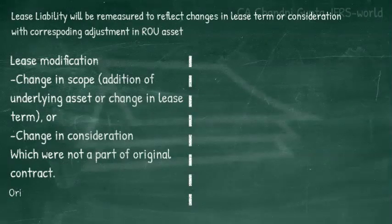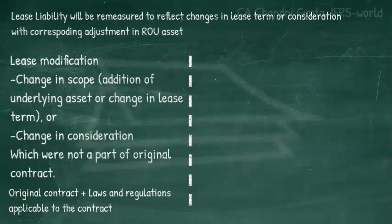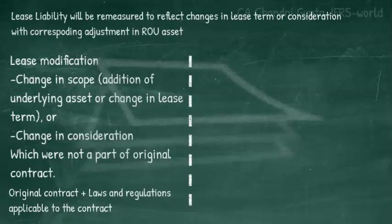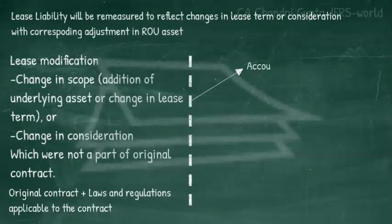To assess whether changes were part of the original terms, the lessee considers both the terms of the contract and relevant facts or circumstances, including applicable laws and regulations. For example, in the COVID situation, many entities received rent concessions or enforced force majeure clauses and stopped making lease payments. If force majeure was part of the contract — or even if it wasn't but was provided for under applicable law — then these concessions or non-payments will not be considered a lease modification. So entities must consider both the original contract and applicable laws and regulations.